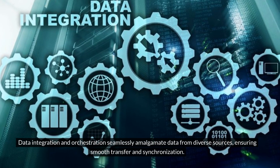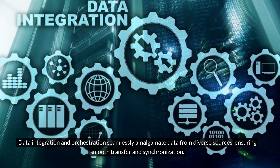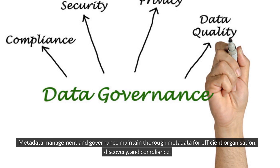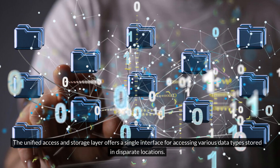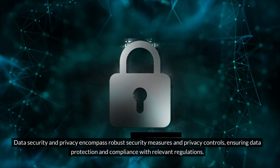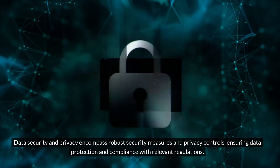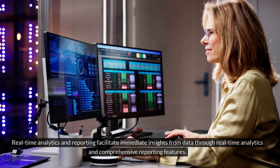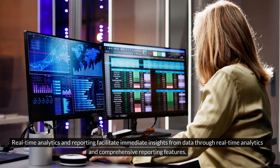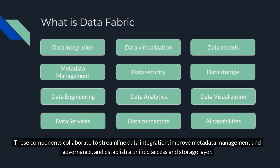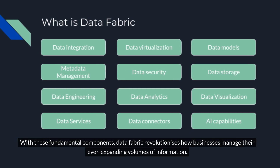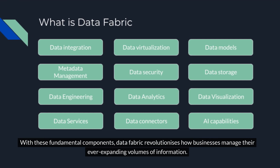Data integration and orchestration seamlessly amalgamate data from diverse sources, ensuring smooth transfer and synchronization. Metadata management and governance maintain thorough metadata for efficient organization, discovery, and compliance. The unified access and storage layer offers a single interface for accessing various data types stored in disparate locations. Data security and privacy encompass robust security measures and privacy controls, ensuring data protection and compliance with relevant regulations. Real-time analytics and reporting facilitate immediate insights from data. These components collaborate to streamline data integration, improve metadata management and governance, and establish a unified access and storage layer, revolutionizing how businesses manage their ever-expanding volumes of information.